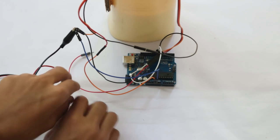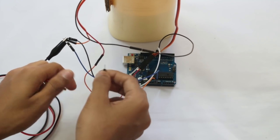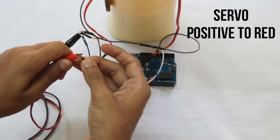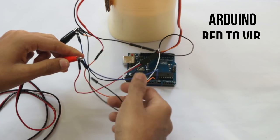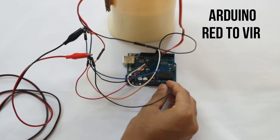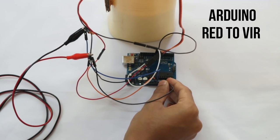Now take your servo's positive, connect to the red. And take another wire and connect this side to the VIR pin.